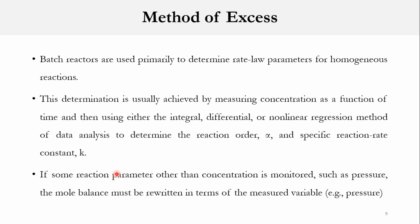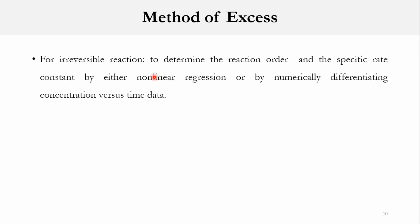If some other reaction parameter is measured other than concentration — for example, if pressure is measured — then we have to rewrite the mole balance in terms of the measured variable, which could be pressure or the number of moles. For irreversible reactions, we have to determine the reaction order and the specific reaction rate constant, alpha and k respectively.